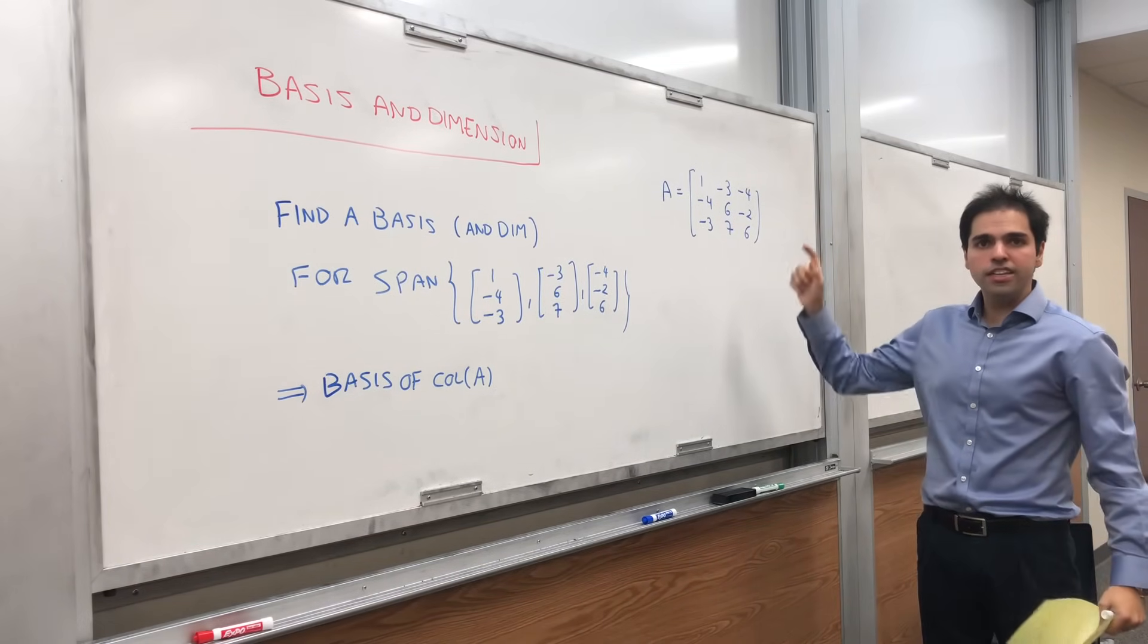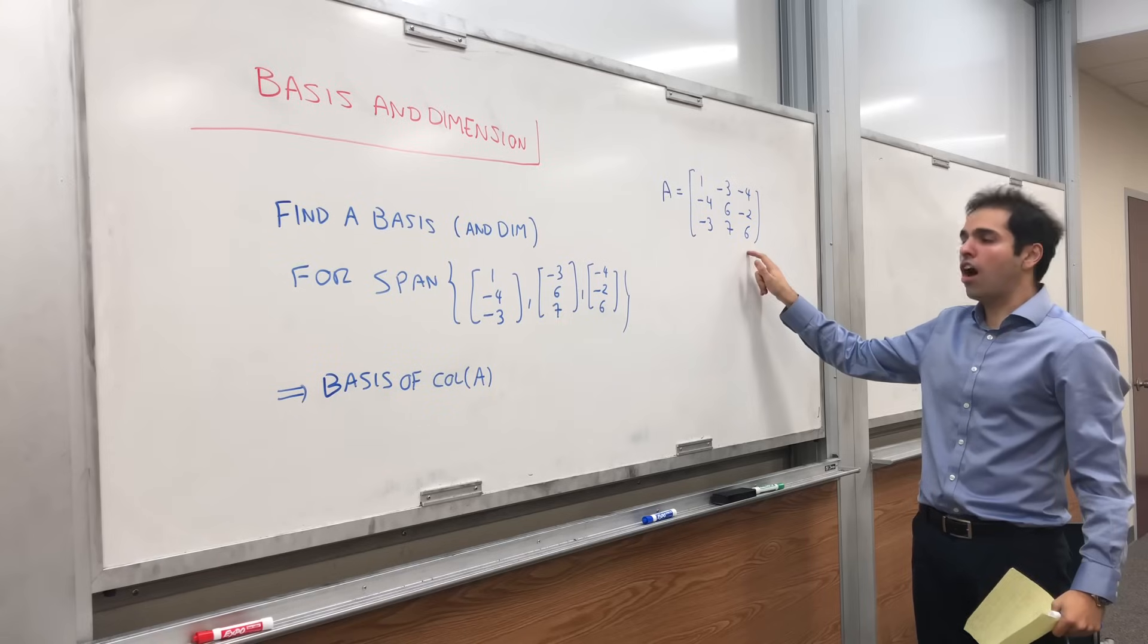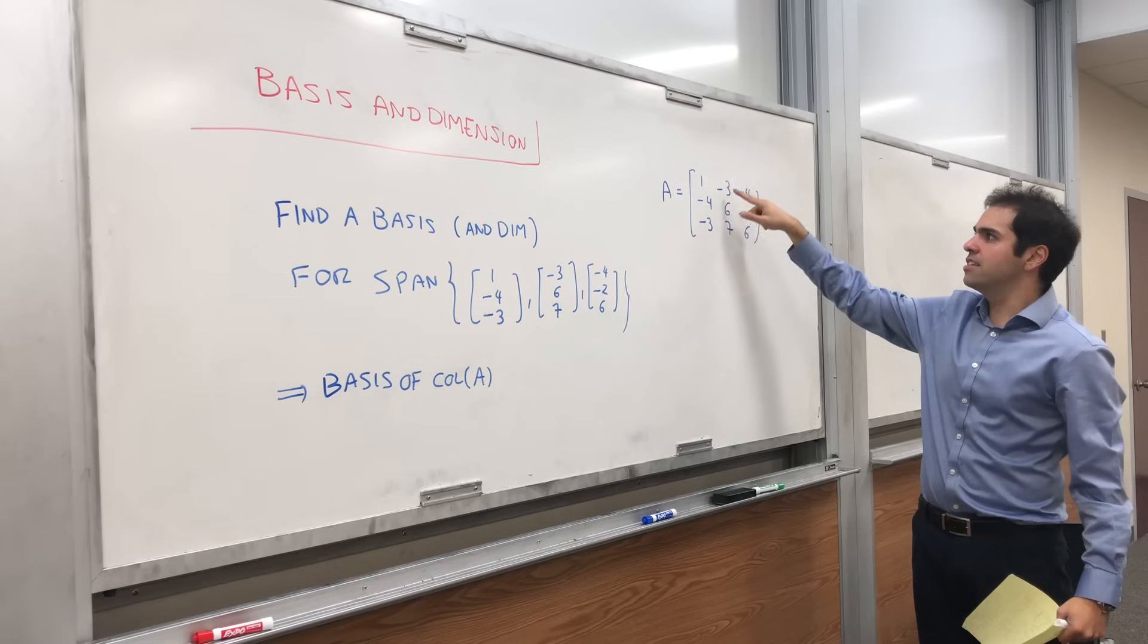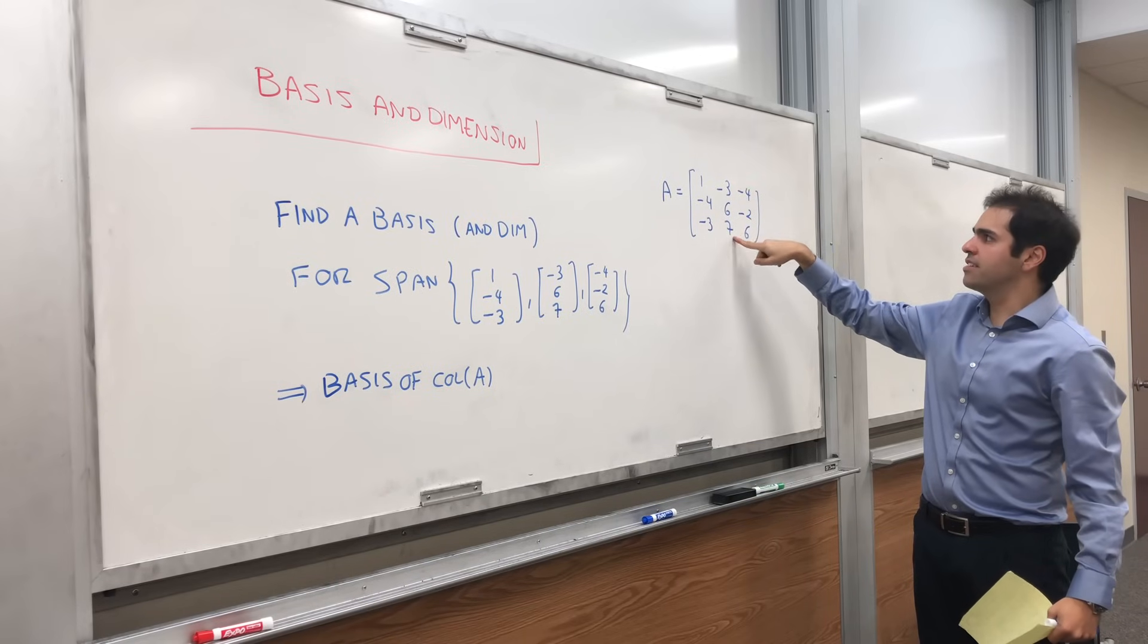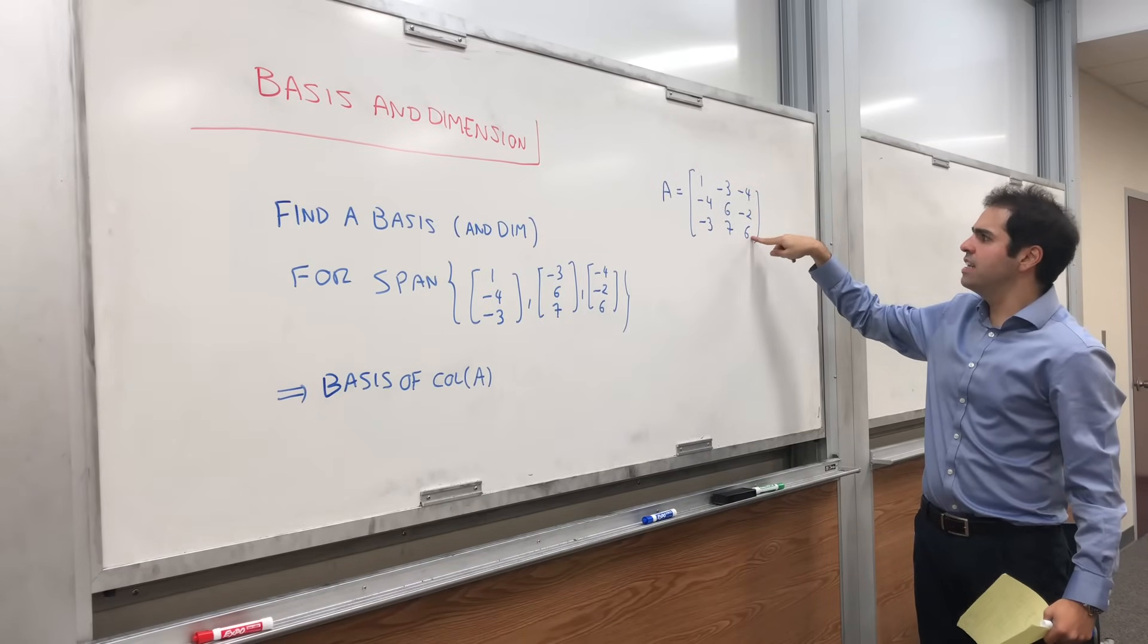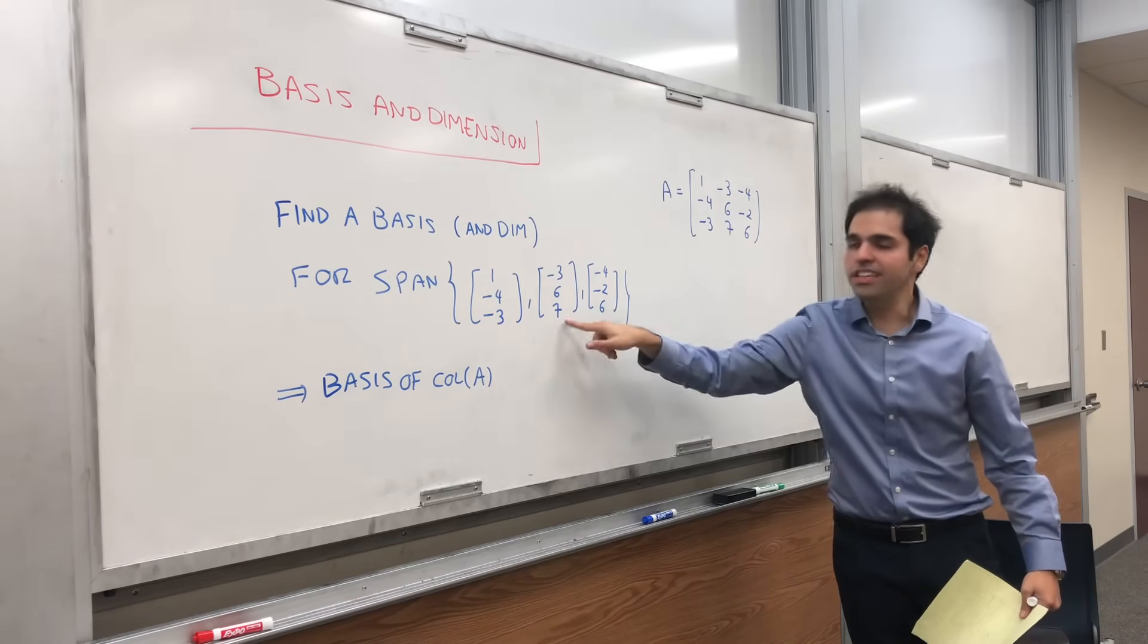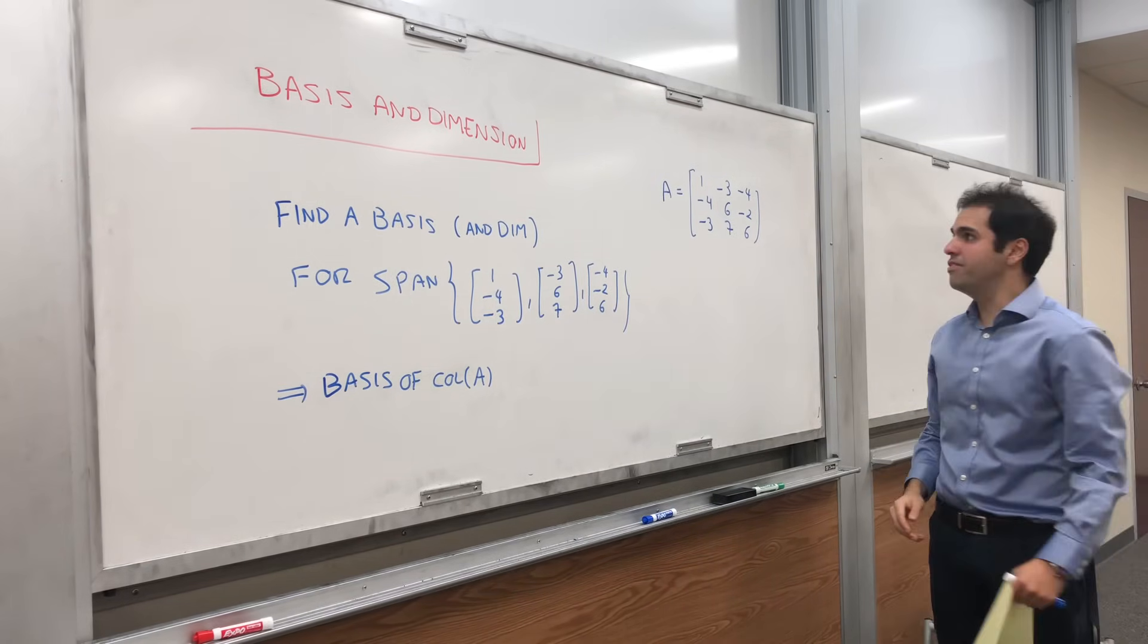The column space is just the span of the columns of A. Here, the columns are [1, -4, -3], [-3, 6, 7], [-4, -2, 6]. And if you take the span of this, you precisely get the span of those three vectors.